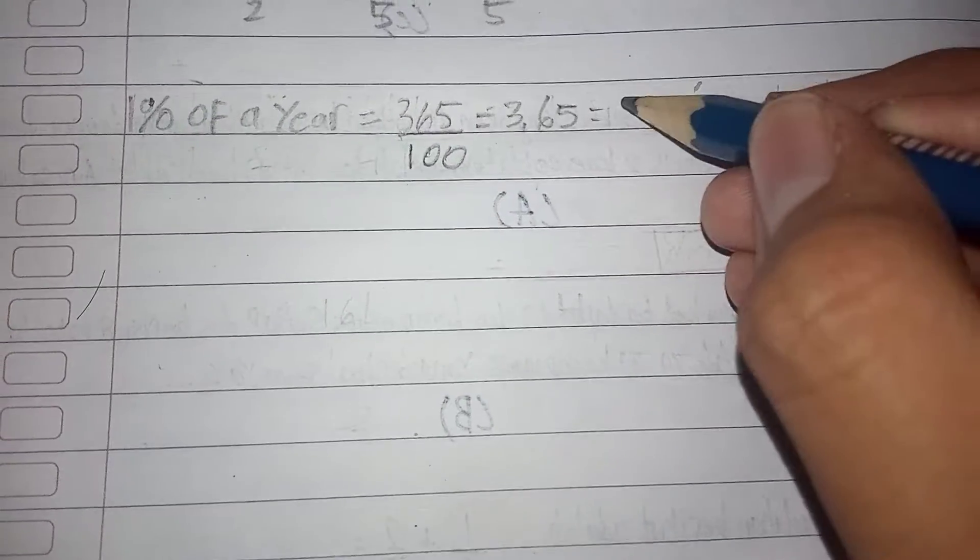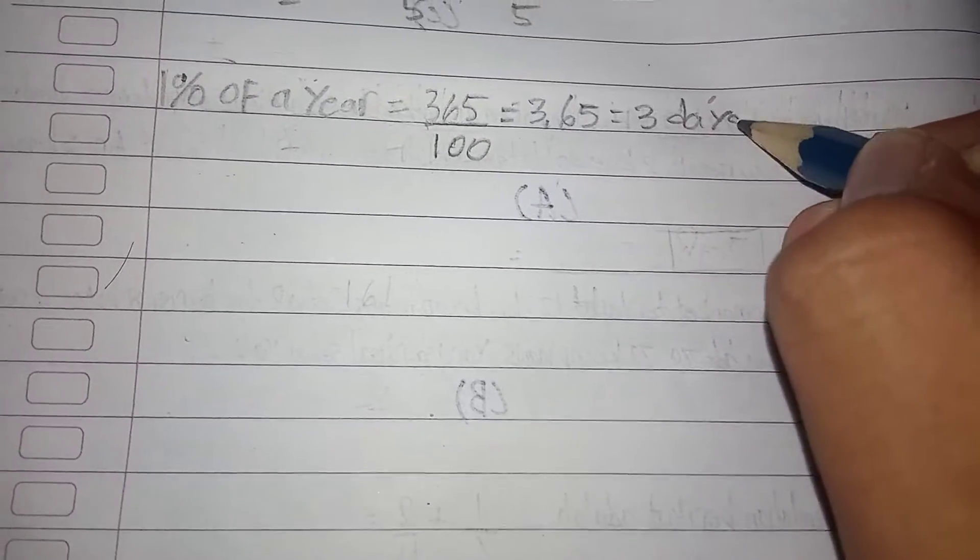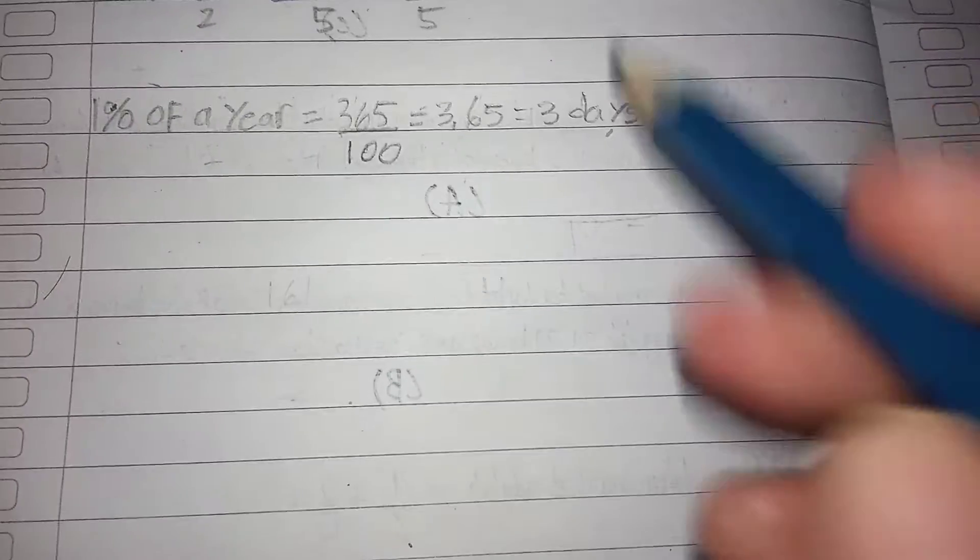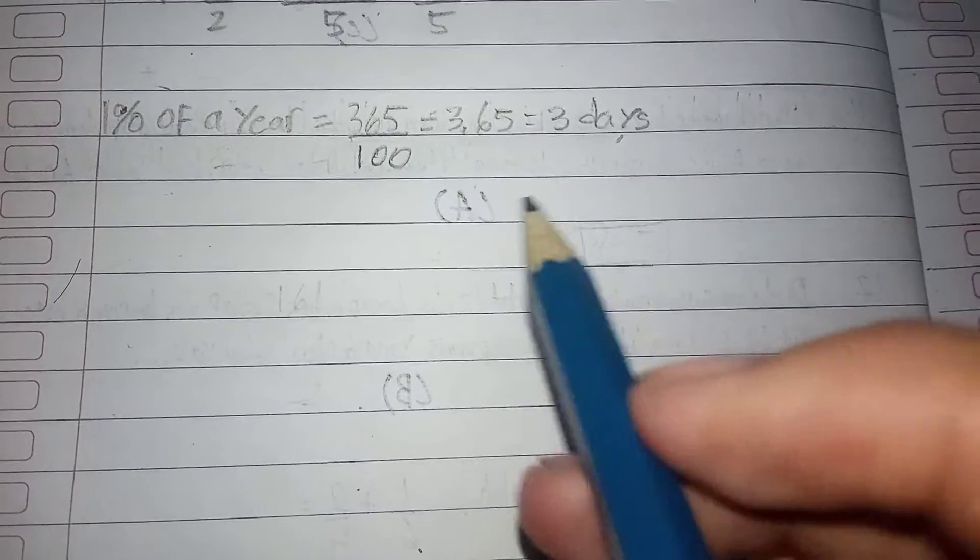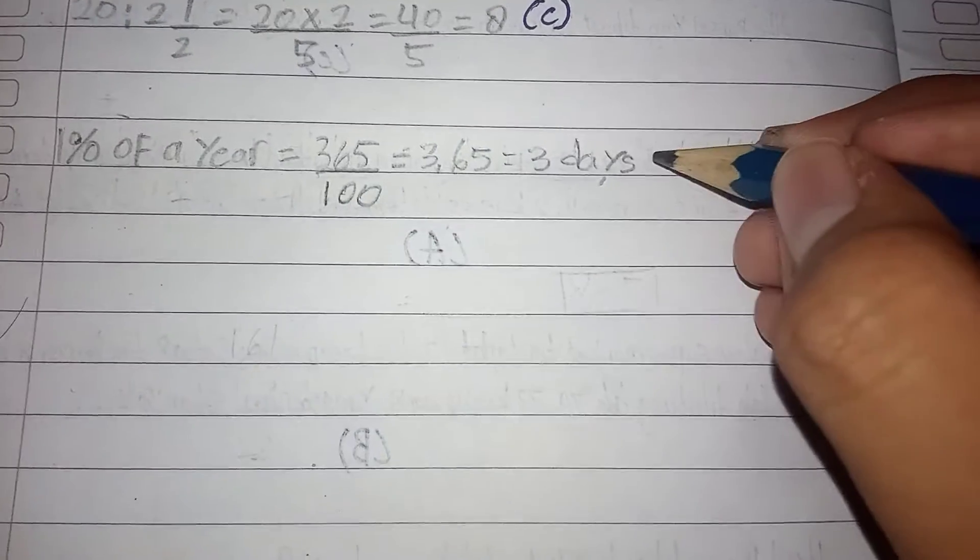And that's equal to 3 days. Okay, let's see, you need to convert this into days, hours, minutes, and seconds if you want. So 0.65 is, yeah, it's gonna be 15 hours here.